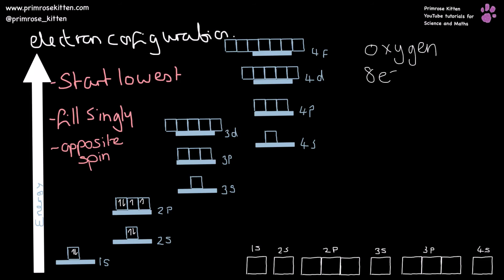That is how we draw the electron configuration of oxygen. Drawing it out gives eight electrons total. Writing it out: 1s², 2s², 2p⁴ — two electrons in the 1s orbital, two in the 2s orbital, and four in the 2p orbitals.